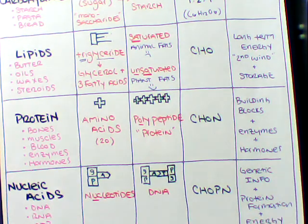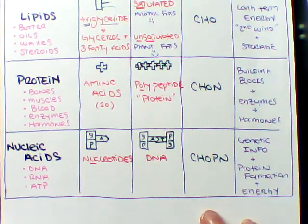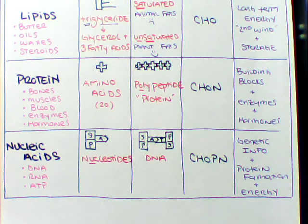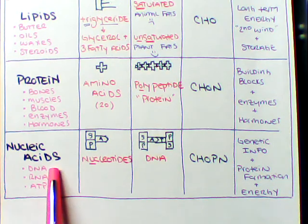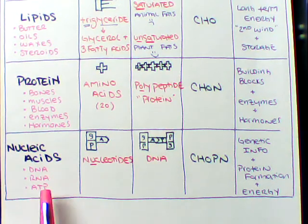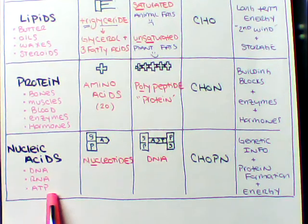Last thing on our macromolecule list here is our nucleic acids. Nucleic acids, you have our deoxyribonucleic acid, ribonucleic acid, and then ATP. So DNA, RNA, and ATP.